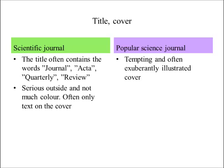The title of a scientific journal often contains the words journal, acta, quarterly, or review. It has a very serious outside and not much colour, often only text. The popular science journal is often tempting and has an exuberantly illustrated cover.